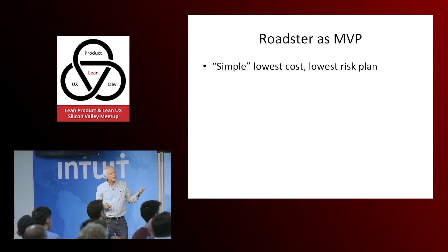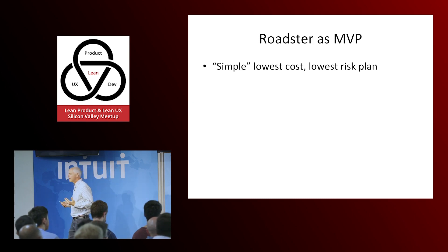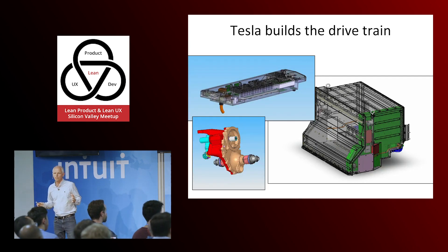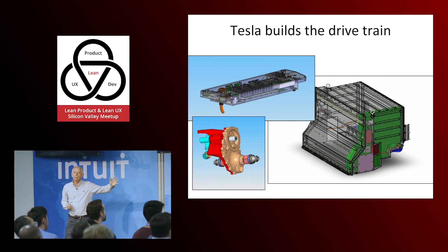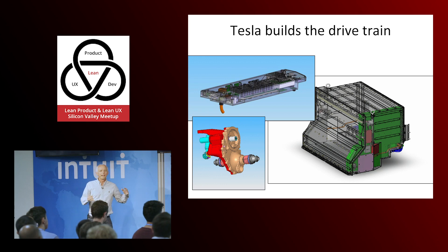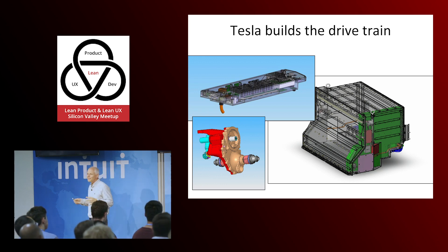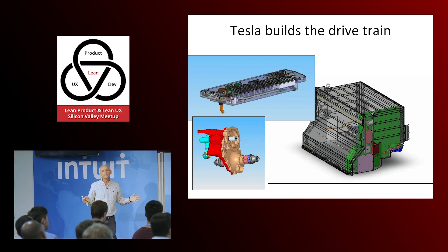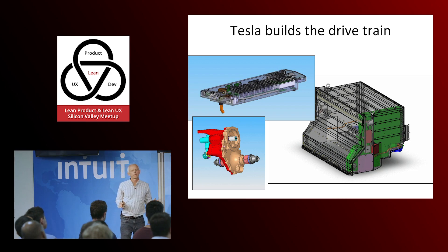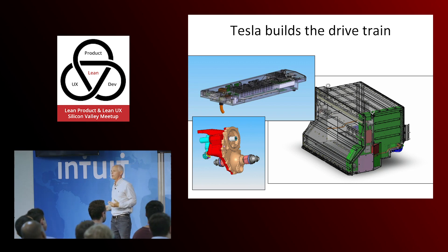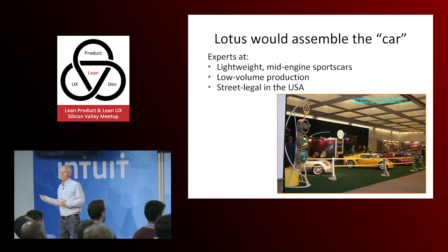We picked a high-performance sports car because we could go faster. We could out-accelerate any internal combustion engine car — the fastest cars you could buy at the time were about four seconds zero to 60. As long as we could meet those numbers, we would have a better product. If you were a sports car enthusiast who wanted the quickest car money could buy, it was going to be our car — and you didn't have to care about it being electric. We conceived the Roadster as our minimum viable product. We would develop the drivetrain: batteries, computers, motors, electronics, and networks. Silicon Valley knows how to do that.